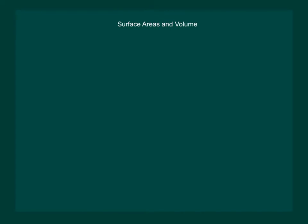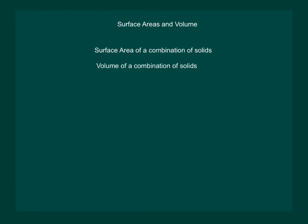Surface Area and Volume. In this chapter we will start with surface area of a combination of solids. Then we shall move to volume of a combination of solids. Further we shall study conversion of solids from one shape to another. Finally we will move to frustum of a cone.